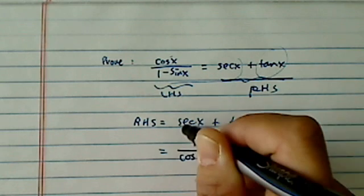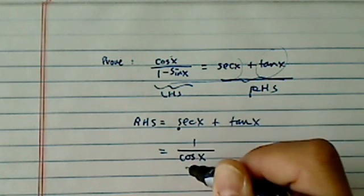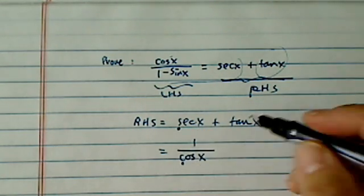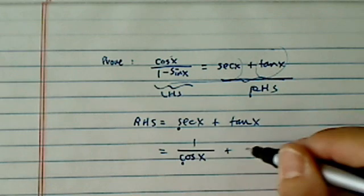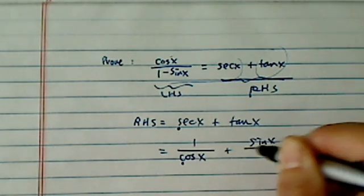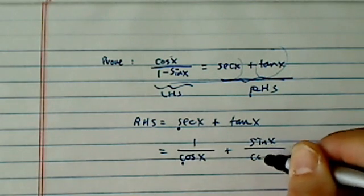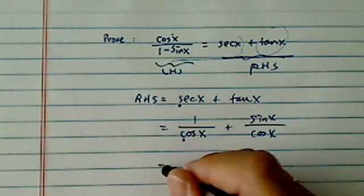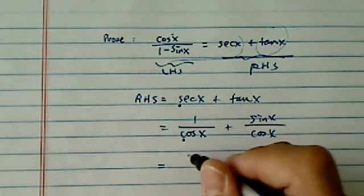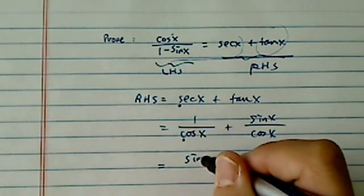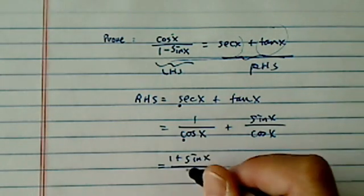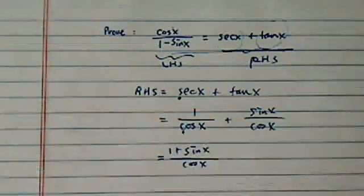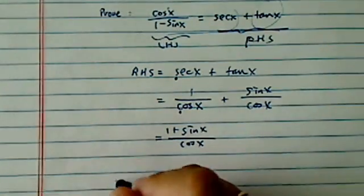Secant is by definition 1 over cosine. If it starts with S, then it's 1 over cosine, plus tangent which is sine over cosine. From here you can see I have 1 plus sine X on top and then cosine X on the bottom. This is as far as we can go on the right hand side.